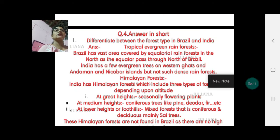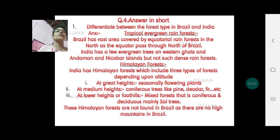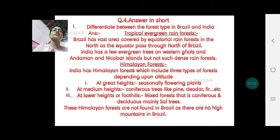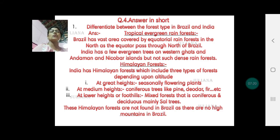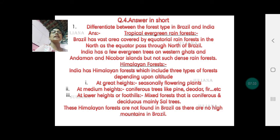Question 4: answer in short — differentiate between the forest types in Brazil and India. We need to keep in mind which forests are not found in Brazil but found in India, and vice versa. Tropical evergreen forest is found in Brazil; Brazil has vast area covered by equatorial rainforests in the north because the equator passes through north of Brazil. India has very few evergreen trees on the Western Ghats and Andaman Nicobar Islands, but not tropical equatorial evergreen forests. India has Himalayan forests, which include three types depending on altitude: at great heights, seasonally flowering plants; at medium height, coniferous trees like pine, deodar, fir; at lower heights, mixed forest — coniferous as well as deciduous, mainly sal trees. These Himalayan forests are not found in Brazil as there are no high mountains in Brazil.